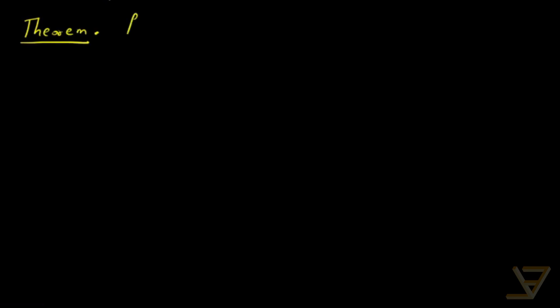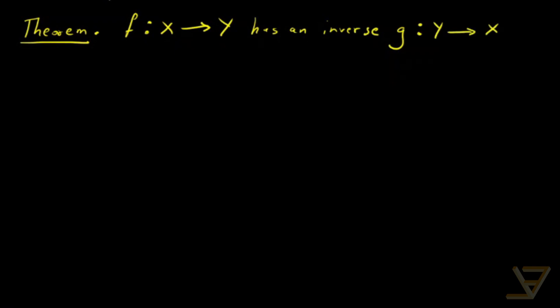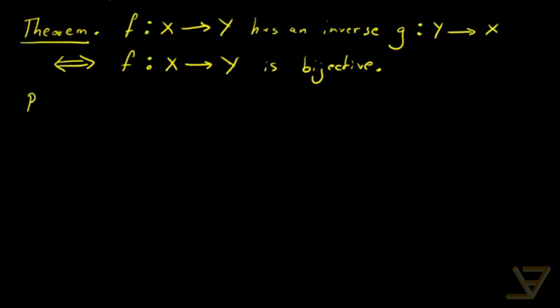We're going to prove that a function is bijective if and only if it has an inverse without the axiom of choice. The theorem: the function f going from X to Y has an inverse g going from Y to X if and only if f is bijective.